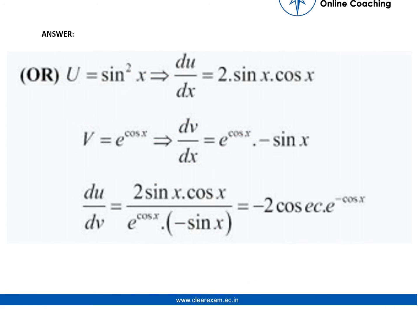The next question we can see we've taken u as sine square x and v as e power cos x. So if we do du by dx we get 2 sin x cos x, and if we do dv by dx we get e power cos x into minus sin x. So if we do du by dv we get what we were looking for, and our answer becomes minus 2 cos x e power minus cos x.